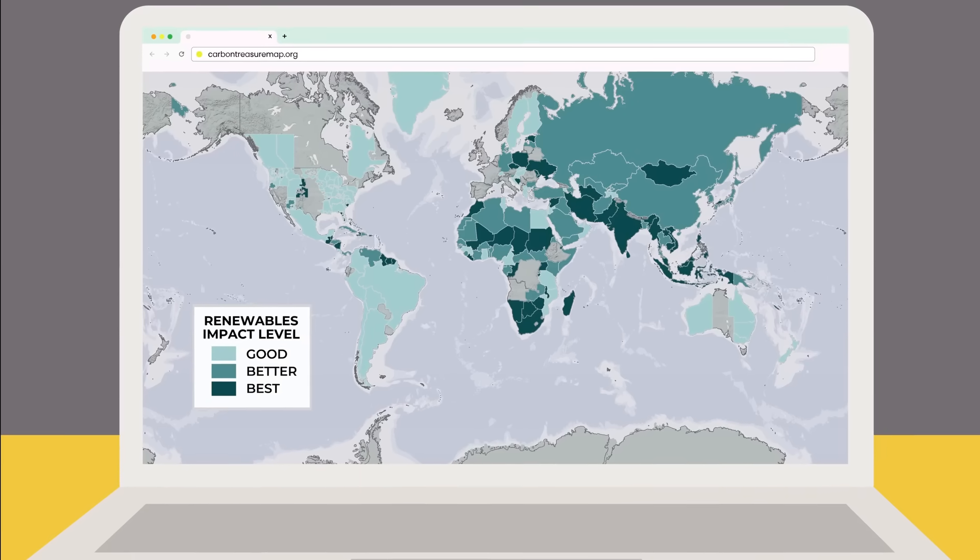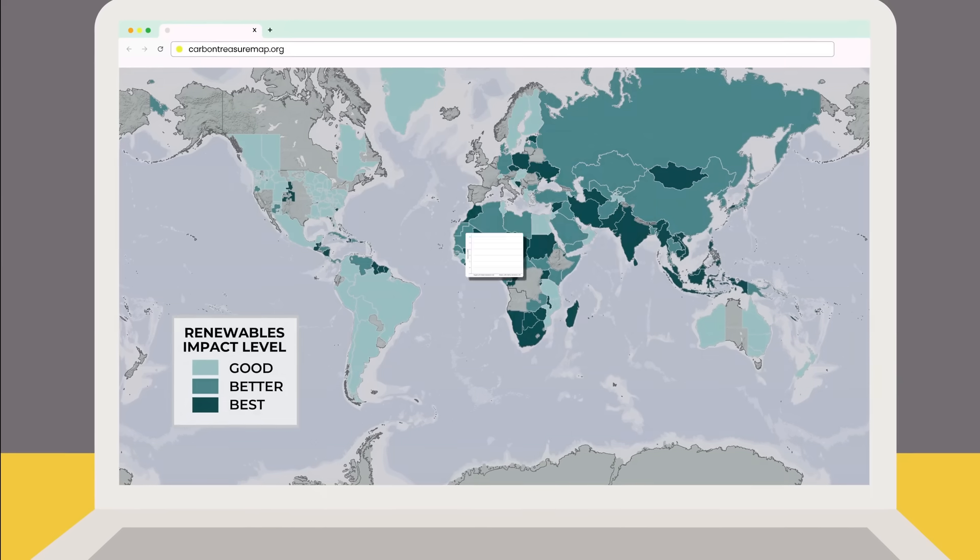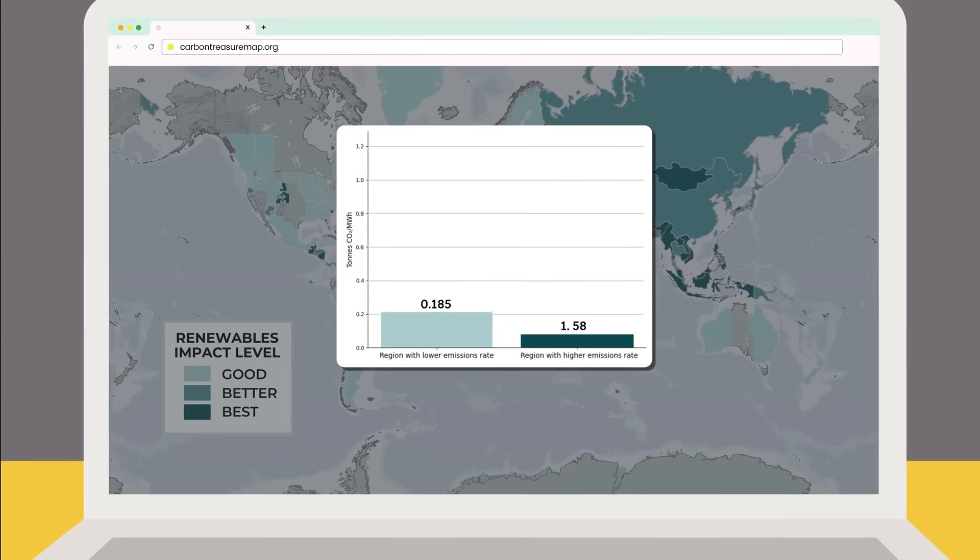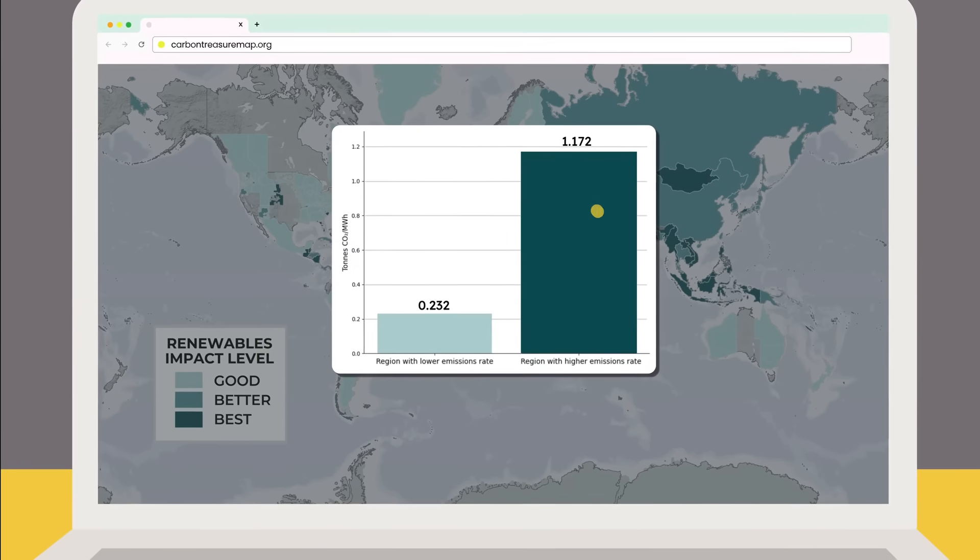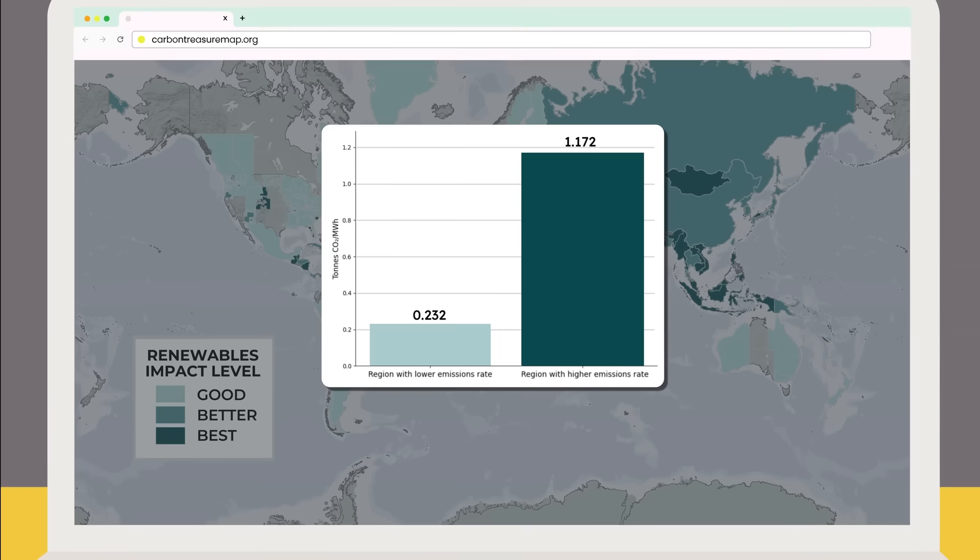In fact, by simply building the same amount of clean energy we already built, but just placing it in smarter locations, we could cut 5.4 billion tons of CO2 per year, more than all the annual emissions in America.